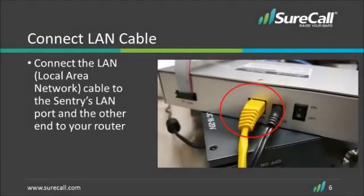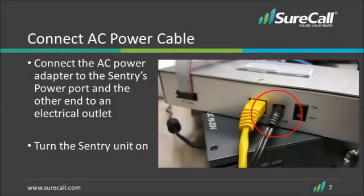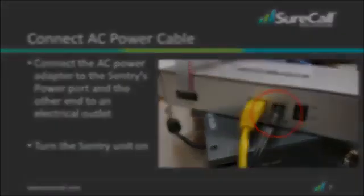Step three, connect the LAN or local area network cable to the Sentry's LAN port and the other end to your router. Connect the AC power adapter to the Sentry's power port and the other end to an electrical outlet. You may now turn the Sentry unit on.